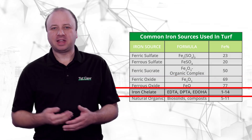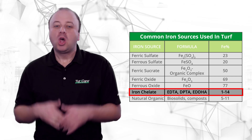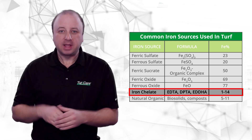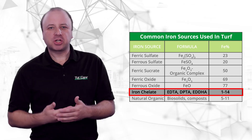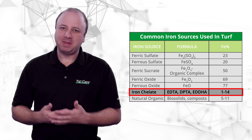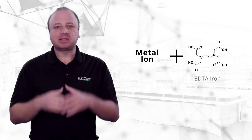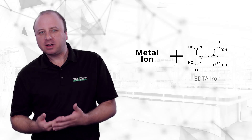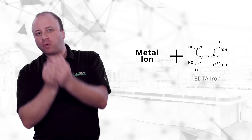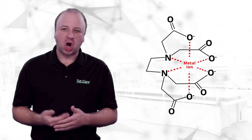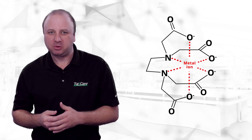Next, let's examine iron chelates, or chelated iron. We often hear the term chelated in the fertilizer industry, but many don't actually understand what it means. Chelation simply refers to a metal ion or atom that is temporarily bonded to or surrounded by an organic complex — just a large carbon-based molecule.